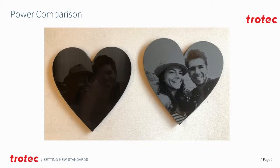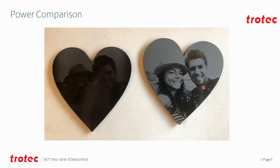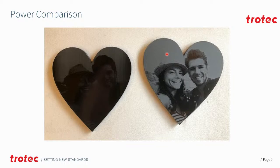Here we have a nice comparison of two different powers. On one side we have something that is clearly underpowered, so we can't see much of the image coming through at all. On the other we have something that's probably slightly overpowered — if we look at the contrast between the upper surface and the hat, we can't see any definition, because too much power makes all those pixels start to overlap and results in a worse quality engraving.